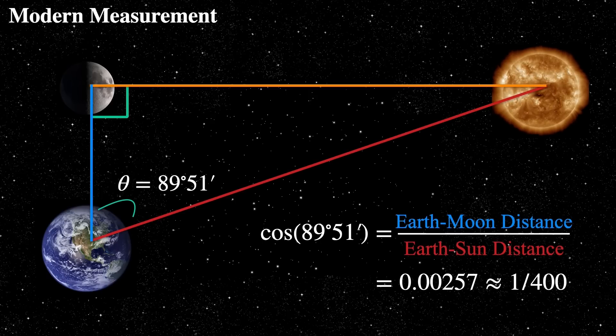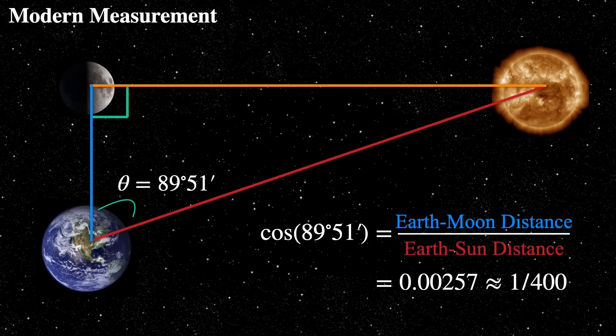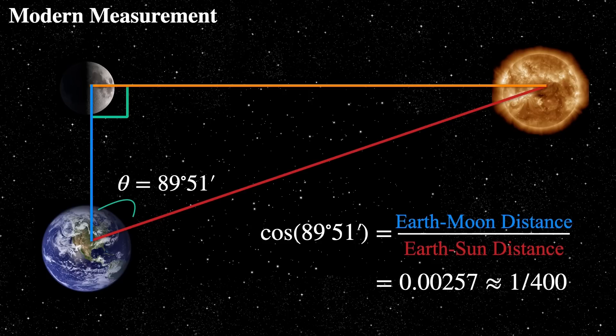We did learn the moon is closer to the earth than the sun. We also learned that the sun is much, much, much larger than the earth, and it's much larger than the moon. This brings up some very interesting questions and points.